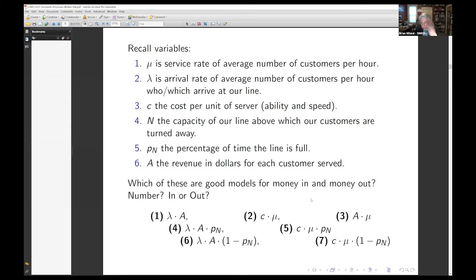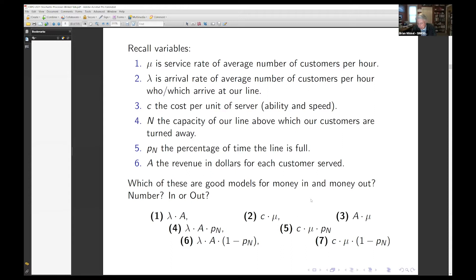After all is said and done, this seems to be a good model. They're arriving at this rate. A fraction of them will be able to get in and I'll make this much money per person. And this will be my cost. What I want to do then is optimize that based on mu. Problem is, I don't know what this is. I don't know what the probability that the system is full, and hence I don't know the probability that there's an opening for someone to come in.